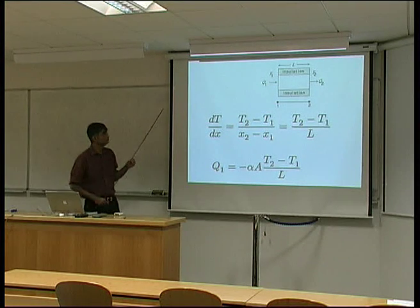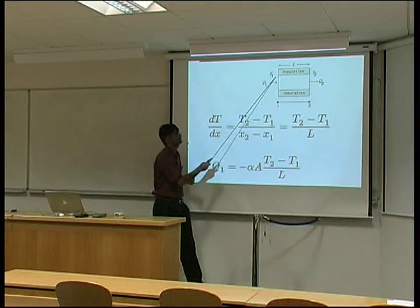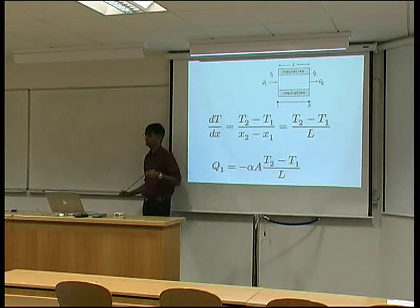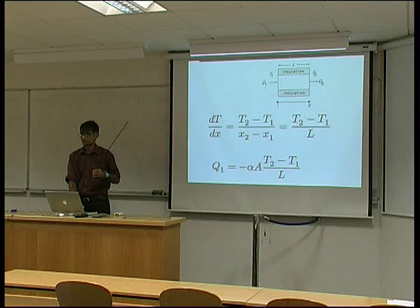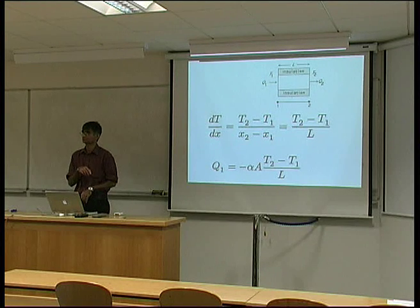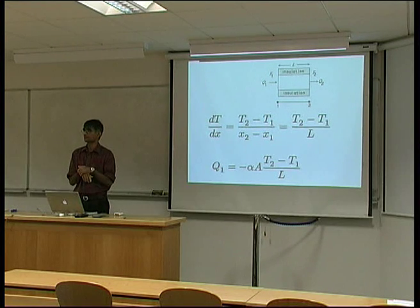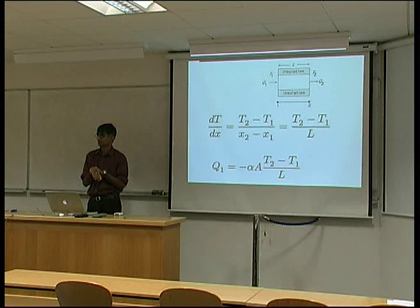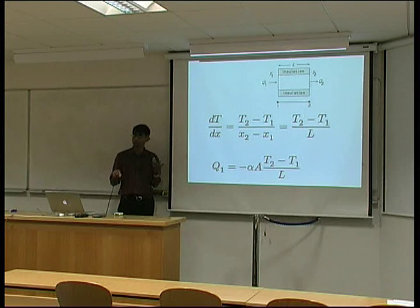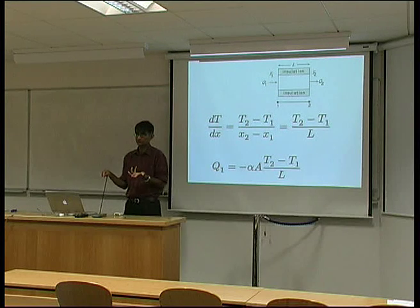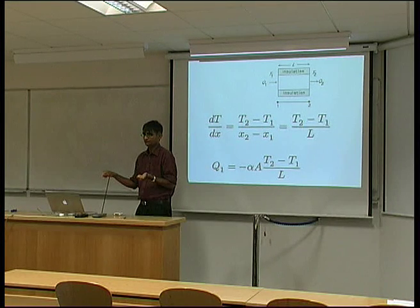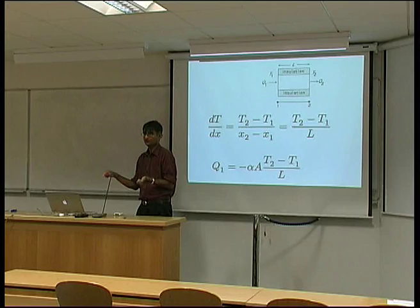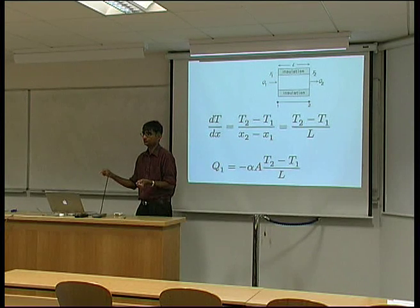Now, I said to you that the temperatures here are maintained constant, T1 and T2. What does that tell you about Q2? We've got a quantity Q1 of heat flowing into the bar. If T1 and T2 are to remain constant, then what does that tell you about Q2?